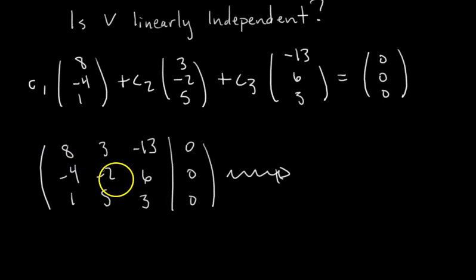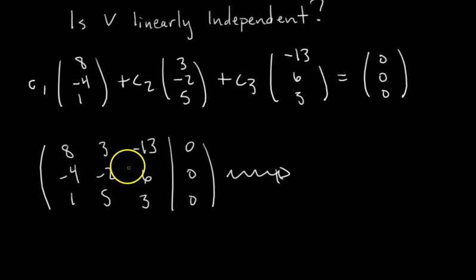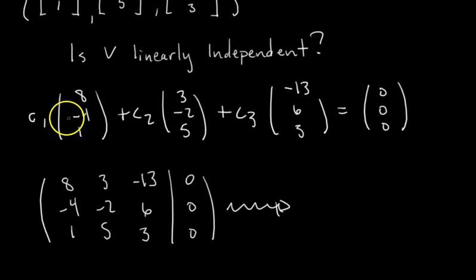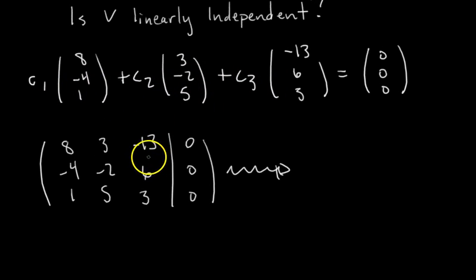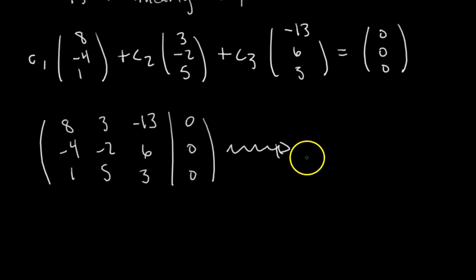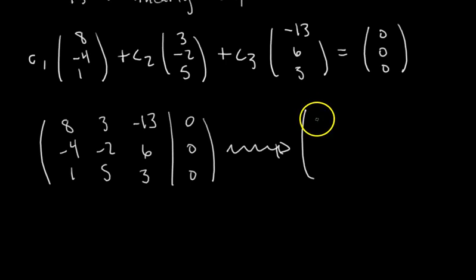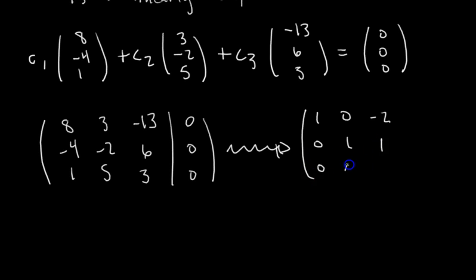If we didn't have a free variable and had a unique solution, that would mean C1 equals 0, C2 equals 0, C3 equals 0 — that's called a trivial solution, which we don't want. We want non-zero scalars, which means we need a free variable, meaning infinitely many solutions. The reduced row echelon form of this matrix looks like: 1, 0, negative 2 / 0, 1, 1 / 0, 0, 0, with the augmented column remaining all zeros.